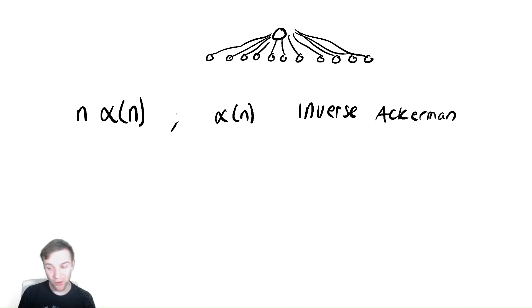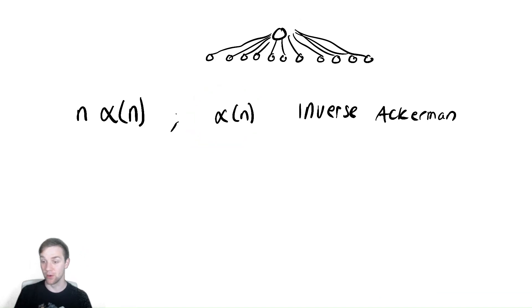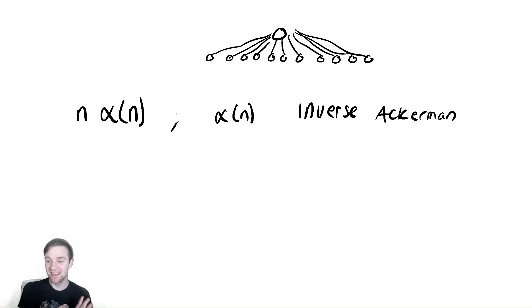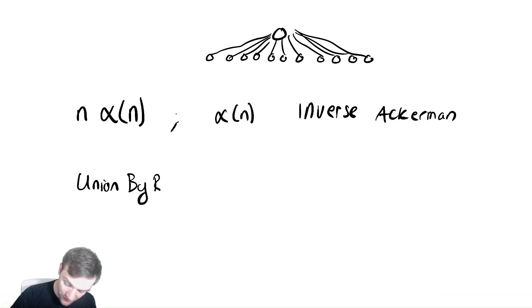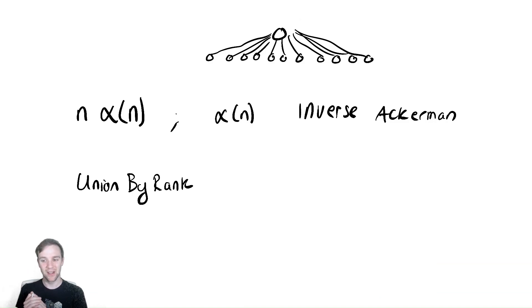If anyone likes Numberphile or typical math YouTube channels, you may have heard of the Ackermann function as a very fast growing function — it grows extremely quickly. The inverse therefore grows very slowly, way slower than logs. As far as anyone is practically concerned, this is effectively a constant. I won't go into this, but if you want to read about it, feel free to read about union by rank for union find. I can also send you information about fast growing functions like the Ackermann function — they're pretty interesting to see how they work.